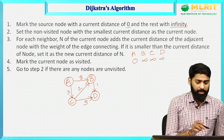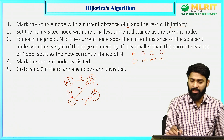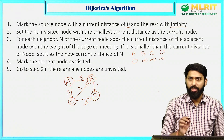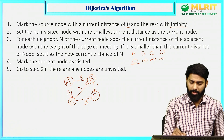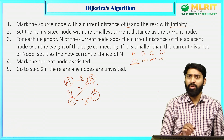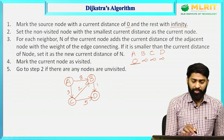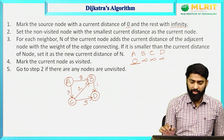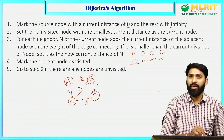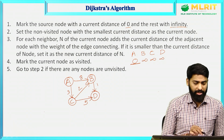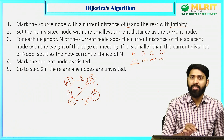Next step: set the non-visited node with the smallest current distance as the current node. If you observe A, B, C, D — A has the smallest distance. Now select A. For each neighbor N of the current node, add the current distance of the adjacent node with the weight of the edge connecting. If it is smaller than the current distance of node, set it as the new current distance of N.